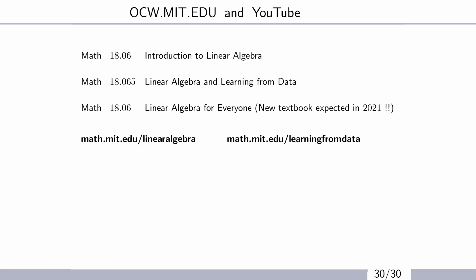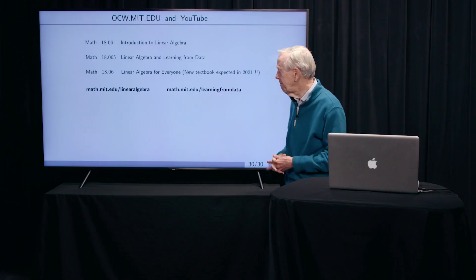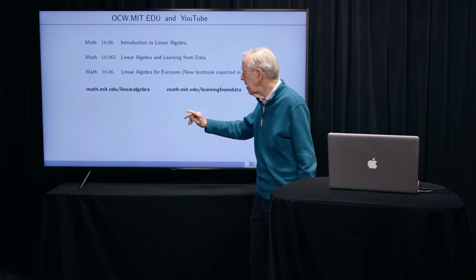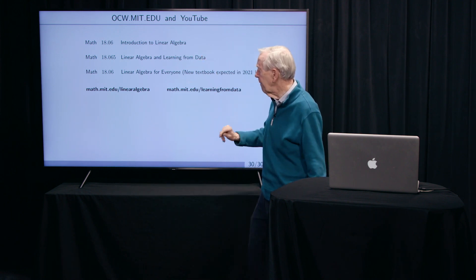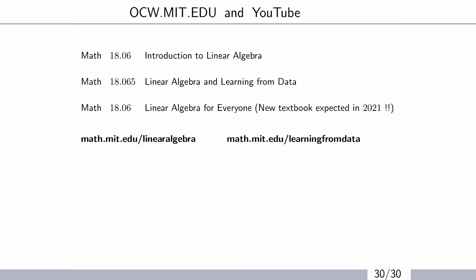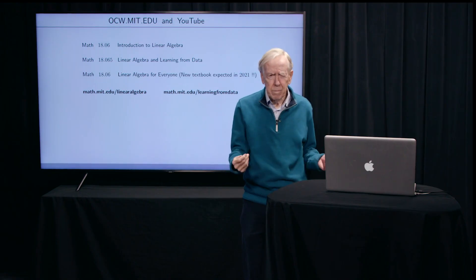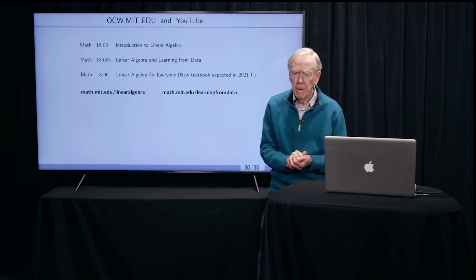So I have optimistically put 2021, and you're the first people to know about it. And so these are the websites for the two that we have. That's the website for the linear algebra book, math.mit.edu. And this is the website for the learning from data book. So you see there the table of contents and solutions to problems, lots of things.